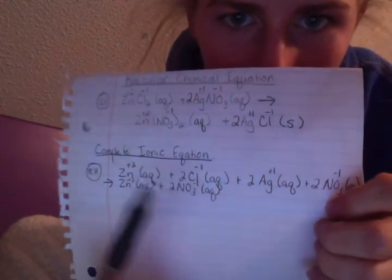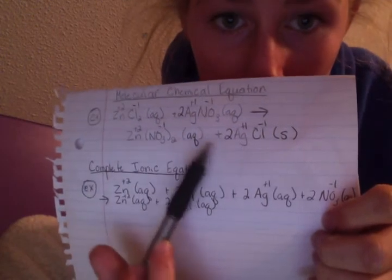I'm going to go down to the next line and draw my arrow, and we're moving on to the products. It's going to be Zn plus 2 aqueous plus 2NO₃ negative 1 aqueous. Then the next one is solid, so you just write plus 2Ag plus 1Cl negative 1 solid.